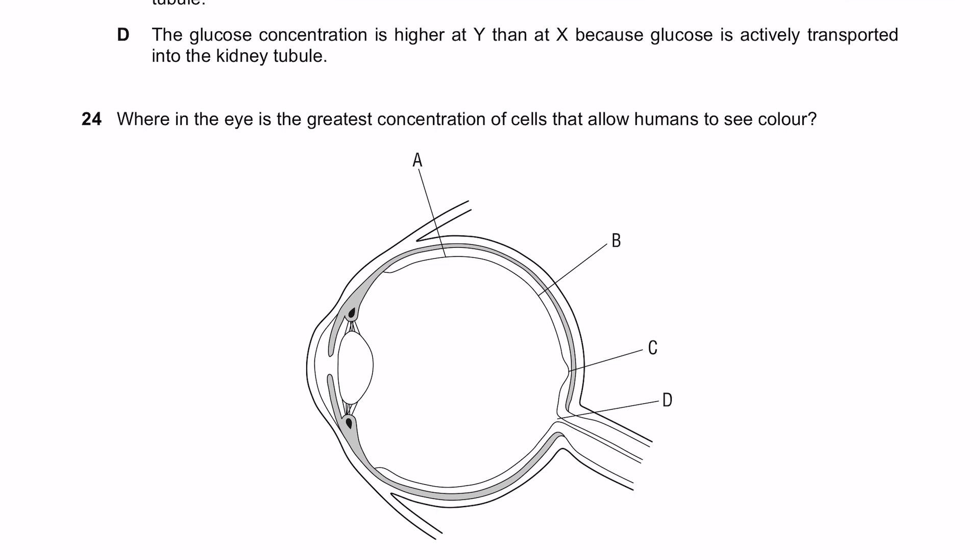Where in the eye is the greatest concentration of cells that allow humans to see color? These, remember, are the cones and they're found in huge numbers in the fovea. This is the fovea, part C.